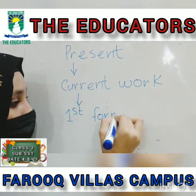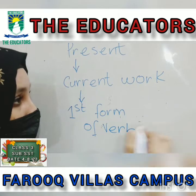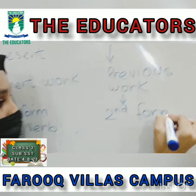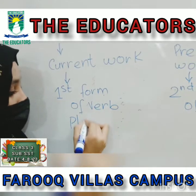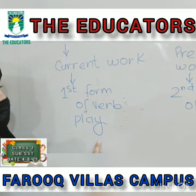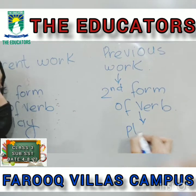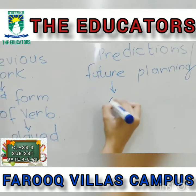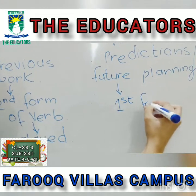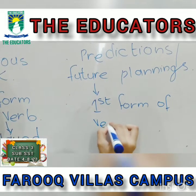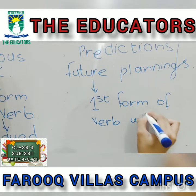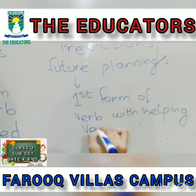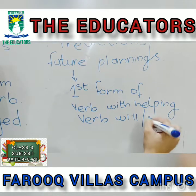In present tense we will use the first form of the verb. In past tense we will use the second form of the verb. For example, there is the word 'play' — the first form is 'play', the second form is 'played'; we add 'ed' at the end. And in future tense we will use the first form of the verb with helping verb 'will' or 'shall'.